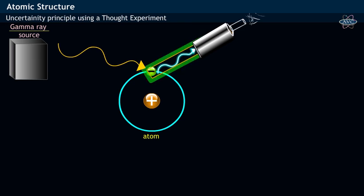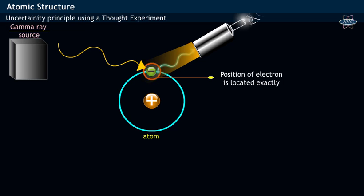This diffracted light entering the microscope allows us to locate the position of the electron exactly.